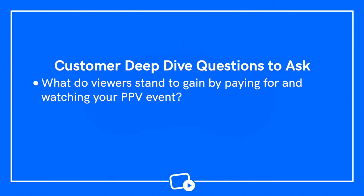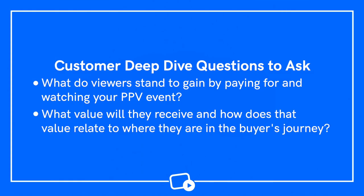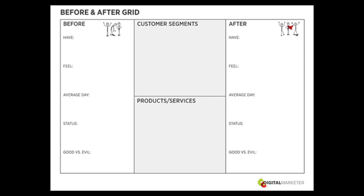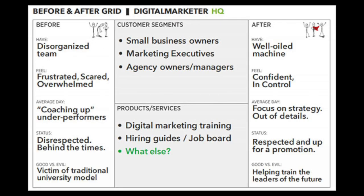What do viewers stand to gain by paying and watching your pay-per-view event? What value will they receive and how does that value relate to where they are in the buyer's journey? There's a simple and easy way to address these questions — it's called the before and after grid. Digital Marketer introduced it as a way to identify what customers want from brand experiences. It compares customers' current states — before they engage with your brand — and their states after they've experienced what your brand has to offer. The grid helps you identify your ideal customer's biggest challenges and their emotional states. Finding your best live stream ideas comes from merging what you know about your audience's needs, wants, and desires with how they can be satisfied.